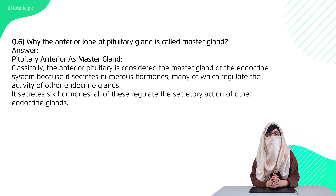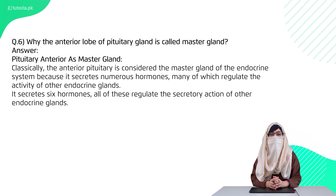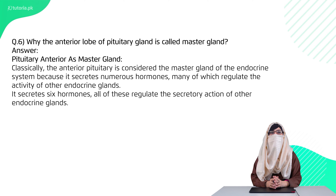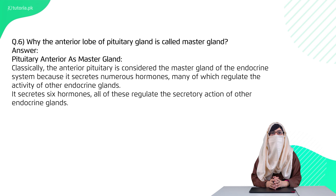Question six: why is the anterior lobe of the pituitary gland called the master gland? Number one, it is directly under the influence of the hypothalamus, and number two, it controls a number of other glands through its hormones.